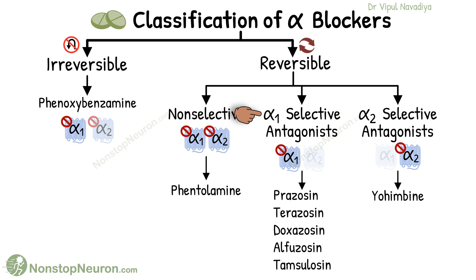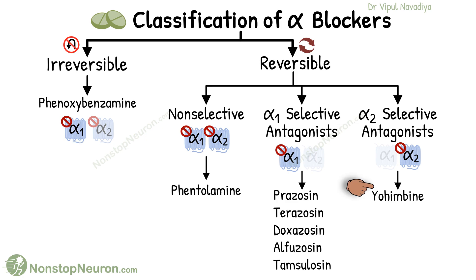Alpha-1 selective antagonists are prazosin, terazosin, doxazosin, alfuzosin, and tamsulosin. The alpha-2 selective blocker is yohimbine.